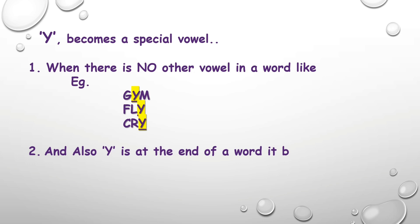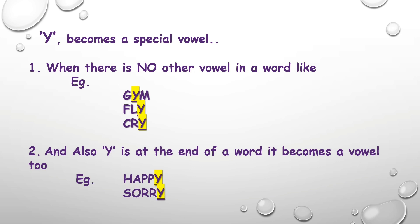The second reason is when Y is at the end of a word, it becomes a vowel too. For example, 'happy' — it pronounces like a long E sound, so it will be a vowel. Taking more examples: 'sorry' — sounds like a vowel E. Next, 'candy' — the same system follows. All this Y comes under the special vowel category.